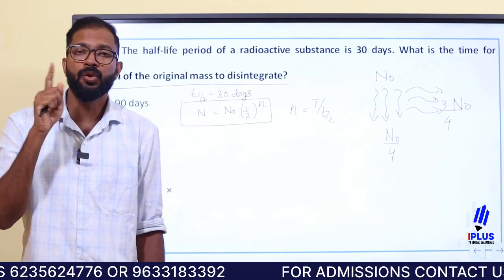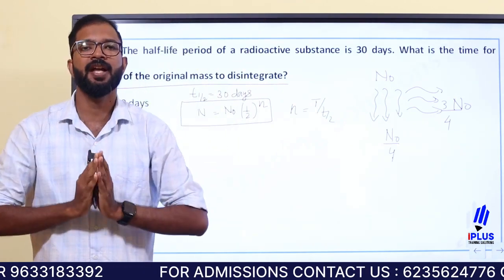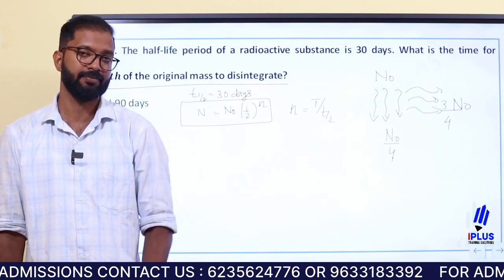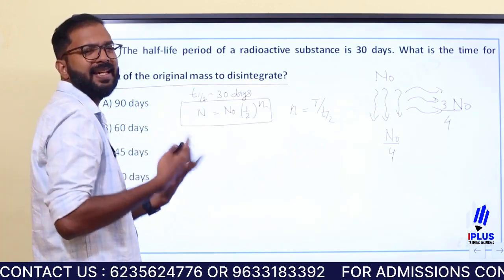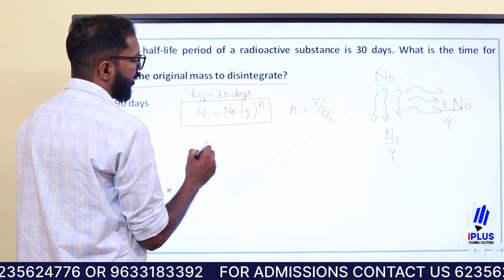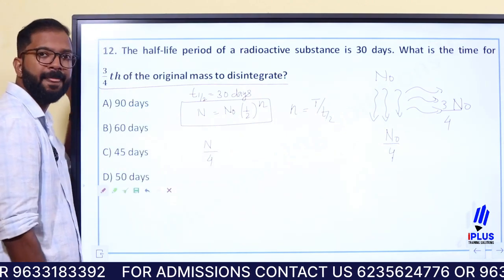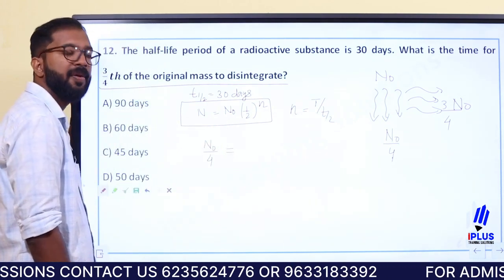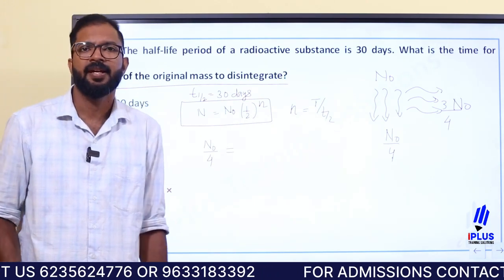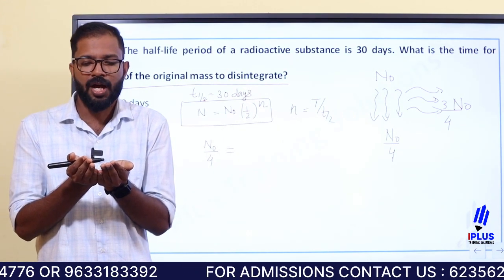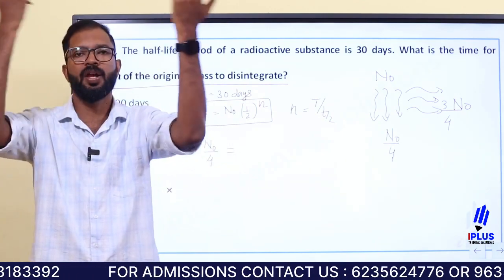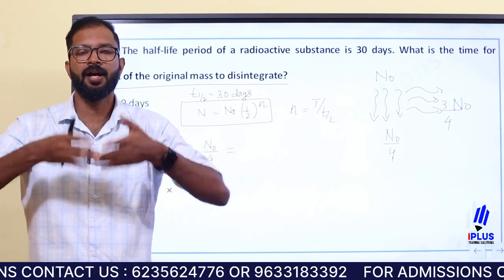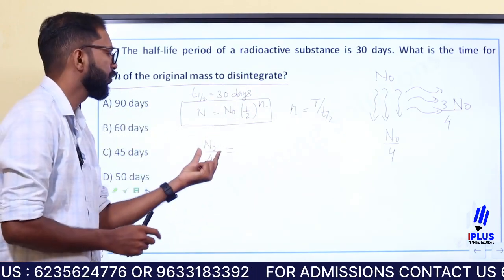3 parts disintegrate, so the remaining part is N/4. The remaining amount is N by 4. If 3/4 has disintegrated, then 1/4 remains, so we can write N/4 equals N times (1/2) raised to n.